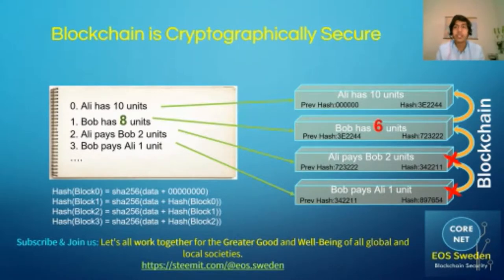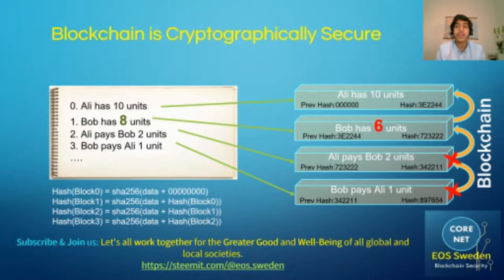Hashes make the blockchain cryptographically secure, so if someone tries to manipulate a block it will be easily detected. In the example given earlier, if someone changed Bob's units from 8 to 6, it can easily be detected because the hashes of that block and all subsequent blocks would be changed.